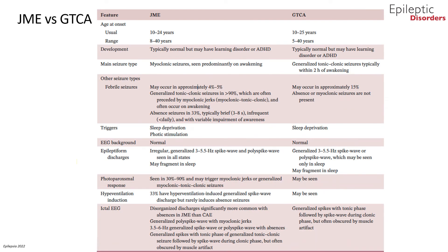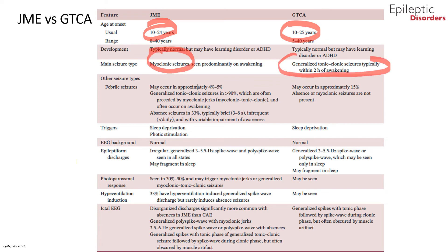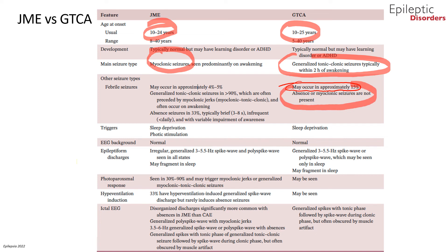This table compares juvenile myoclonic epilepsy with epilepsy with generalized tonic-clonic seizures alone. The usual age of onset for both is 10 to 24 years. The main seizure type differs: myoclonic seizures in JME versus generalized tonic-clonic seizures in GTCS alone. Febrile seizures can be seen in 15% of GTCS alone patients. Absence and myoclonic seizures are not present in GTCS alone. Both syndromes are triggered by sleep deprivation. Epileptiform discharge frequency is comparable at 3 to 5.5 Hz spike and poly spike-wave, though in JME the interictal discharges may appear irregular, while in GTCS alone they may be seen only in sleep.